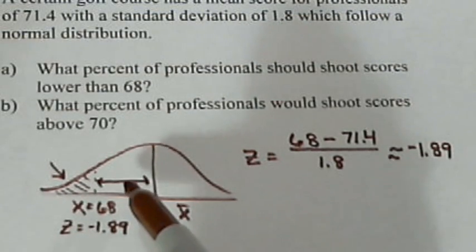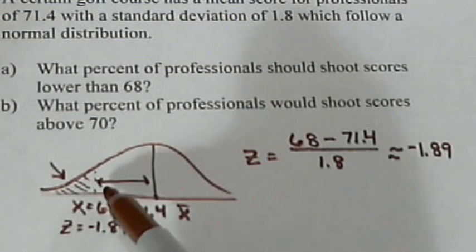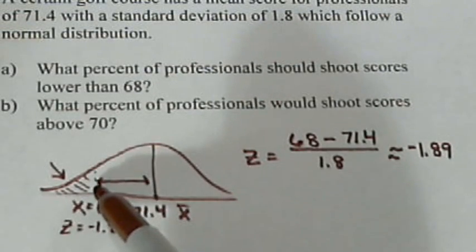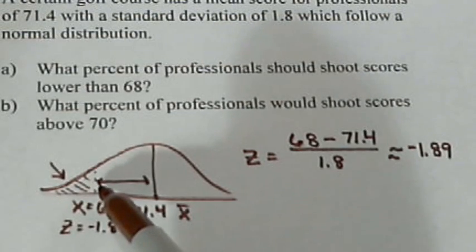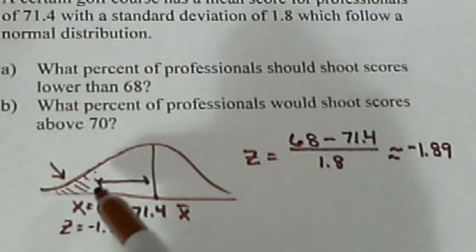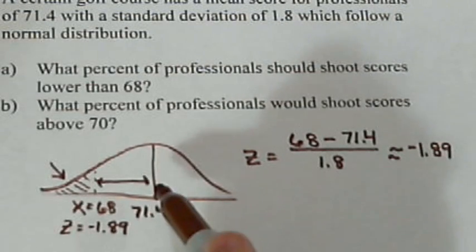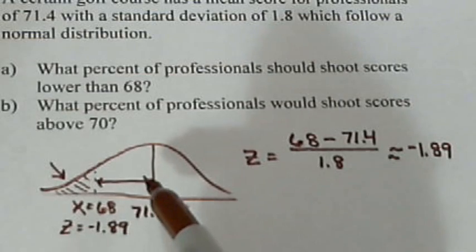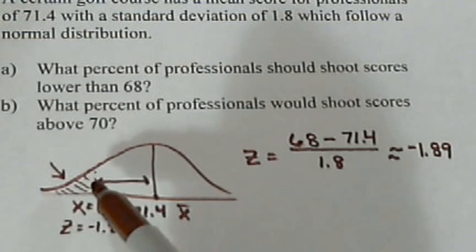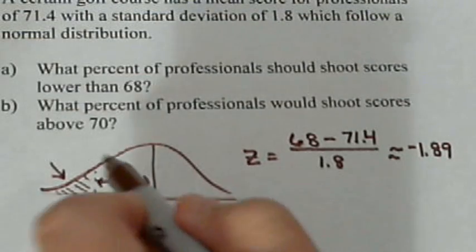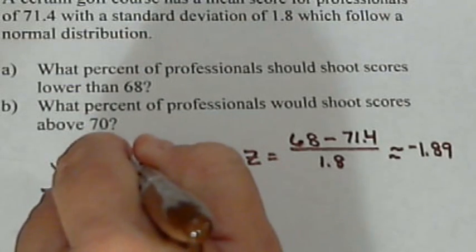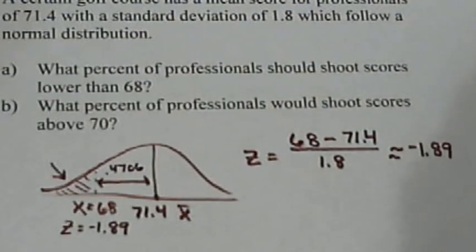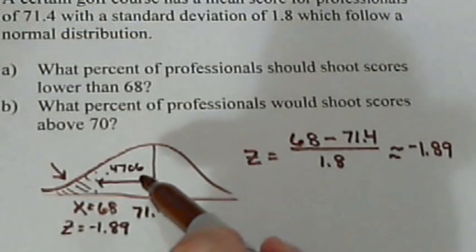If you're not using that table or if you're not in my class, then you may have a table that gives you the percent from here all the way to the left edge or from here all the way to the right edge. And you'll just have to make the adjustment based on your table. So if we use the table that gives the percent from here to here, that percent is 0.4706, which is 47.06%.